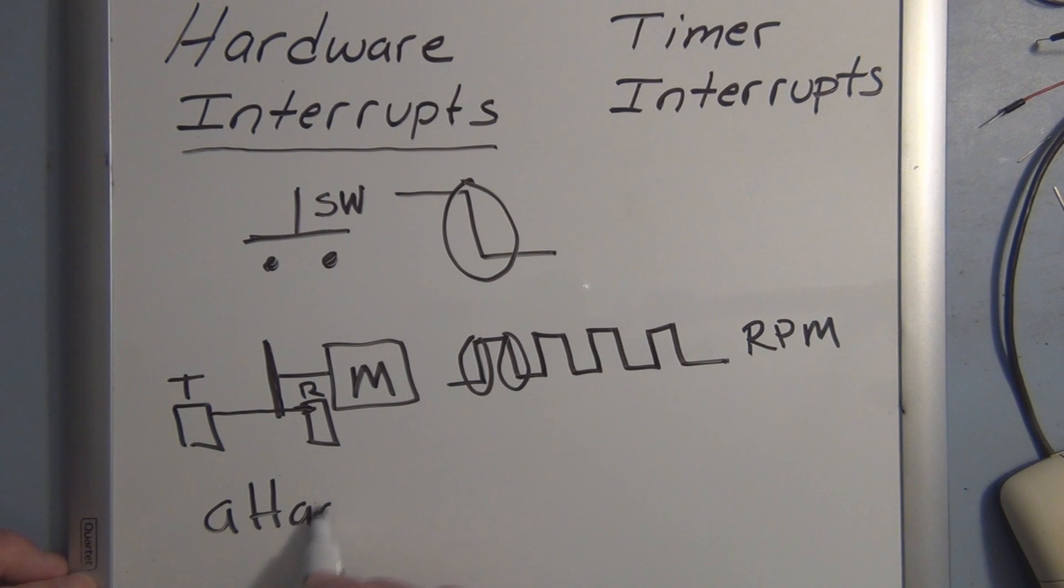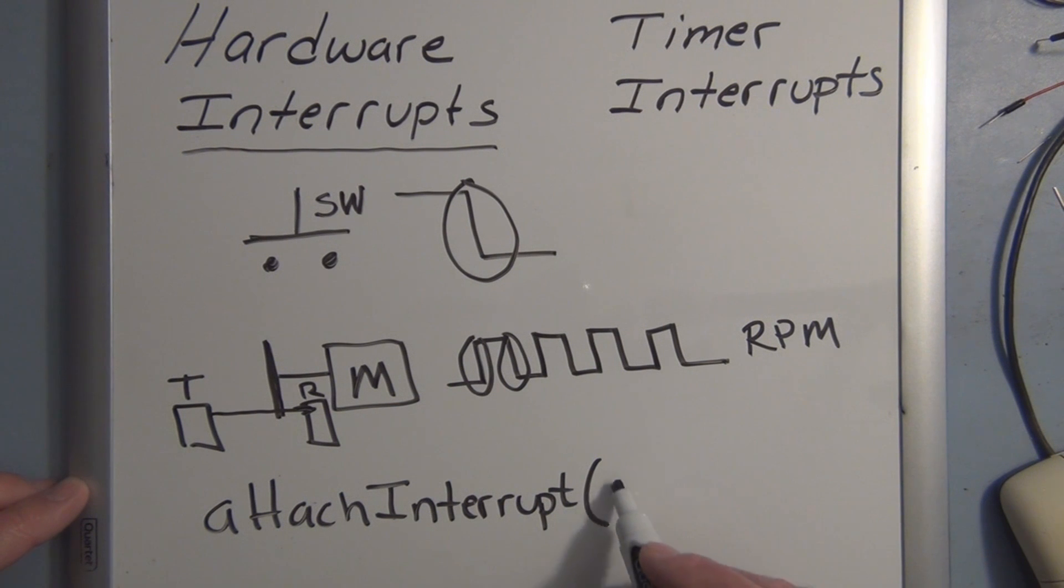This was a switch, so we would use attachInterrupt, which has three arguments. The first argument is what interrupt. If we're connected to pin two, if we're monitoring a signal with pin two, that's interrupt zero. The next argument is the function that is going to get called when we see the state change. We have to specify the state change as either rising or falling or high or low.